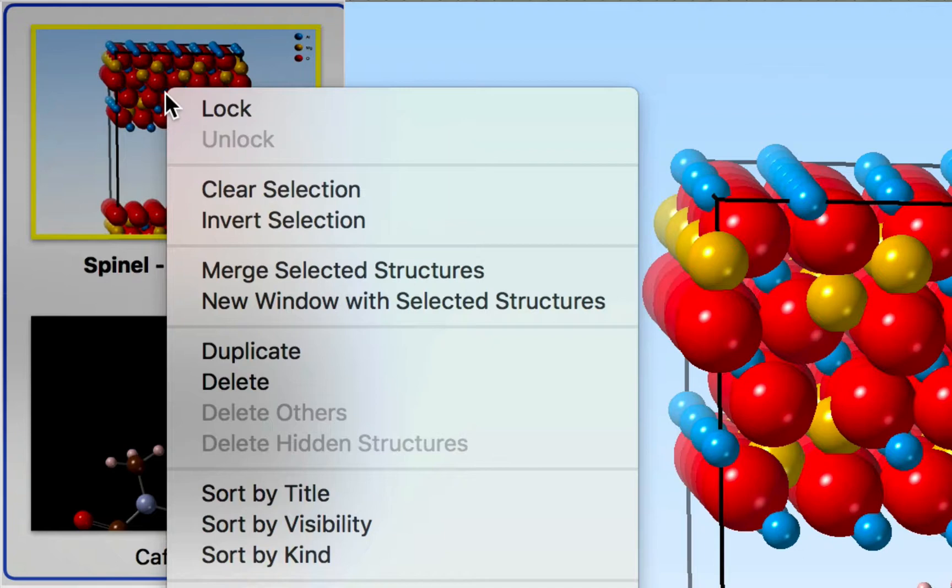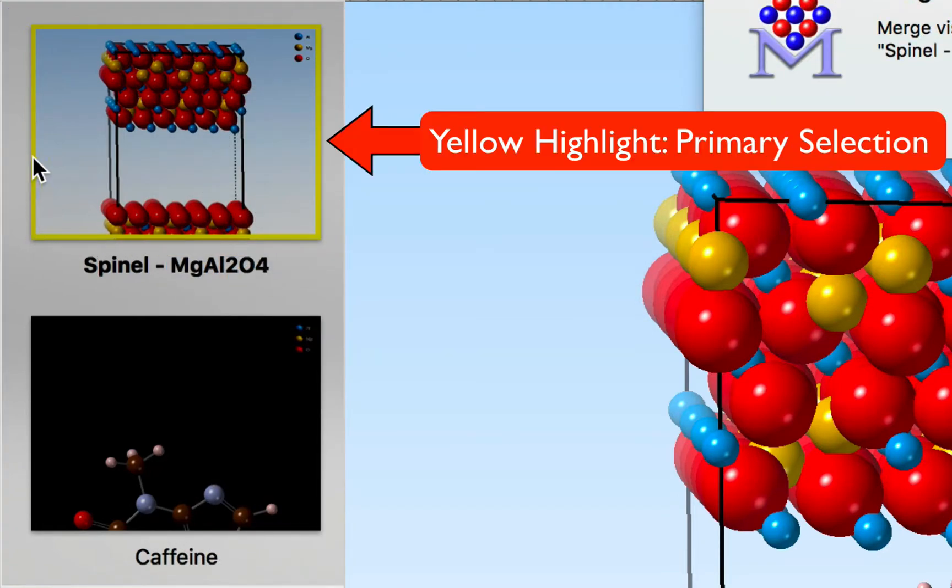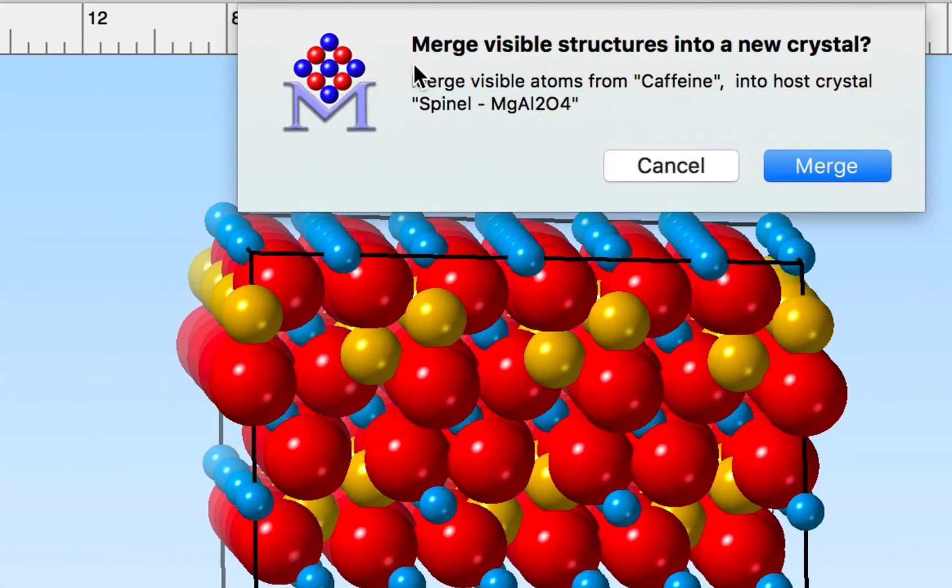I can right click in the structures list and I can do merge selected structures. Now the order here is important. You'll notice that the spinel structure has got the yellow highlight around it that's our primary selection and so what we're going to be doing here is we're going to be merging atoms from caffeine into the primary selected structure the crystal. The little sheet here tells me what's going to happen and that's what I want to do so I'm going to click the merge button.